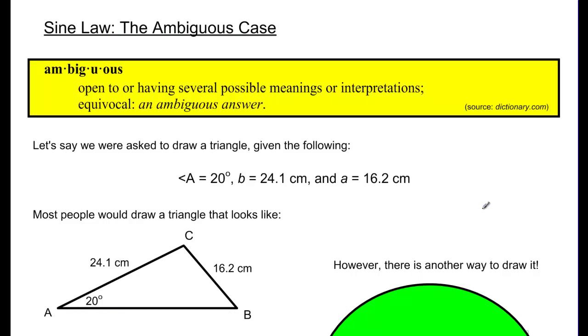Today's lesson is going to focus on a specific type of case that can occur when we use the sine law, and we call this the ambiguous case.